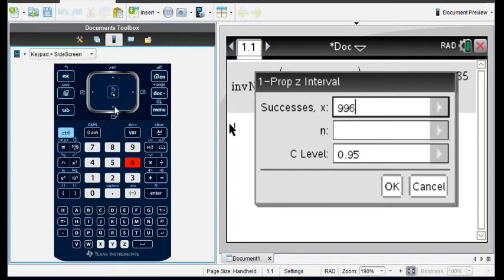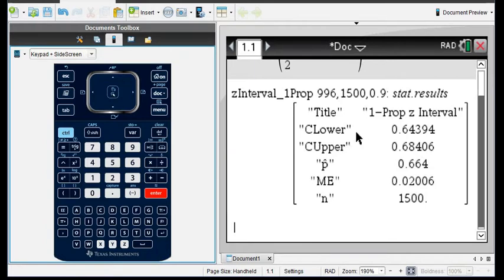It's going to ask for the number of successes. So the number of successes in this case is 996. This must be a whole number. If they don't give you the number of successes, I do have a video that shows you how to convert a percentage to an x value. N is going to be our number in our sample, the 1,500, and our confidence level is going to be 0.9.